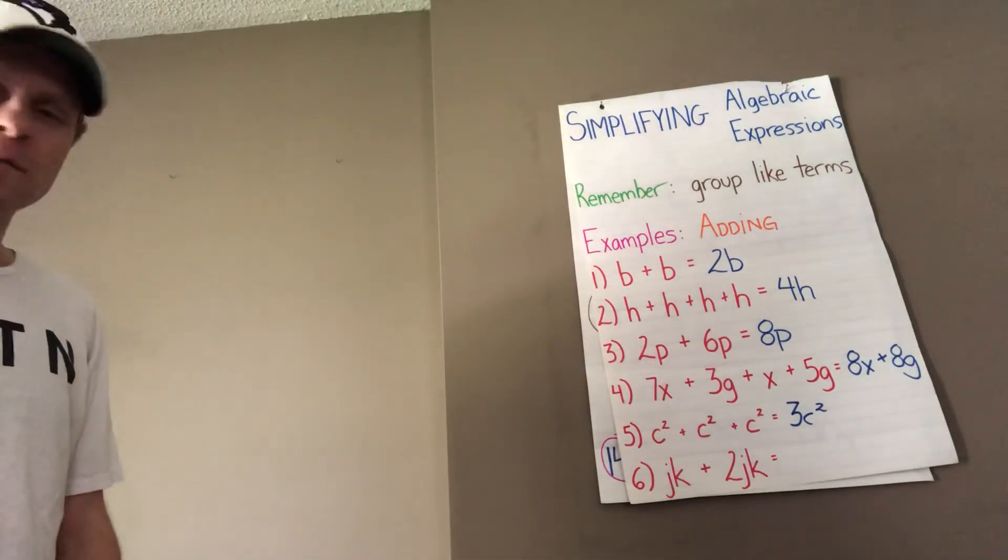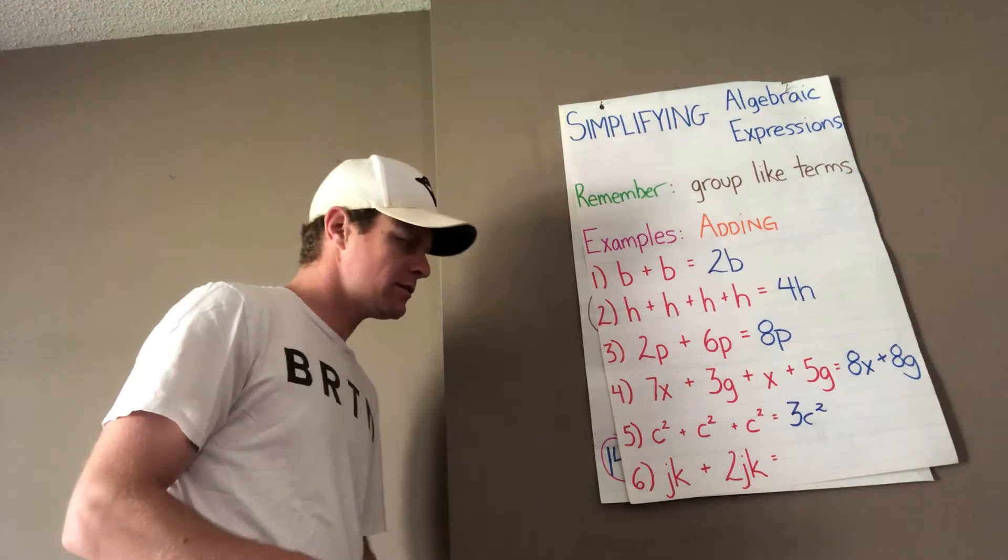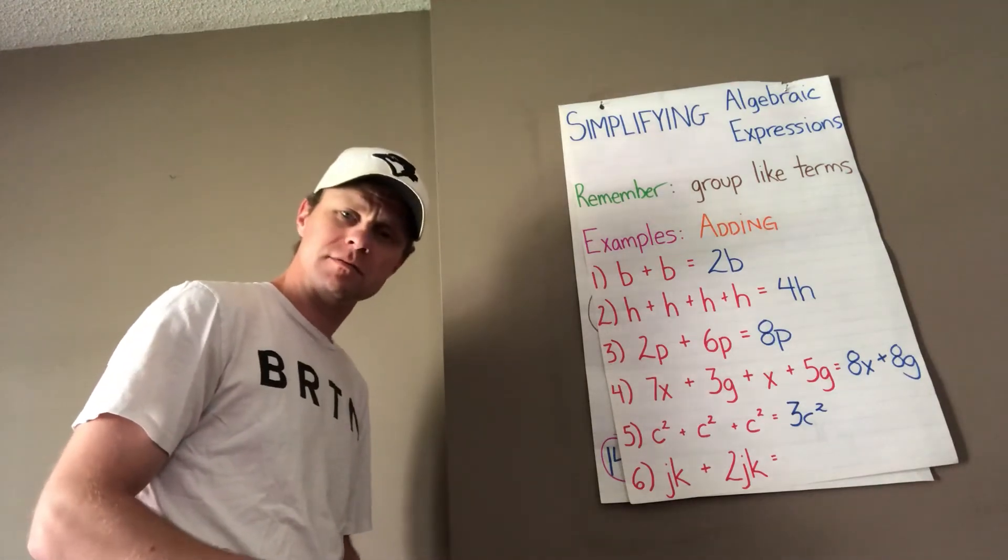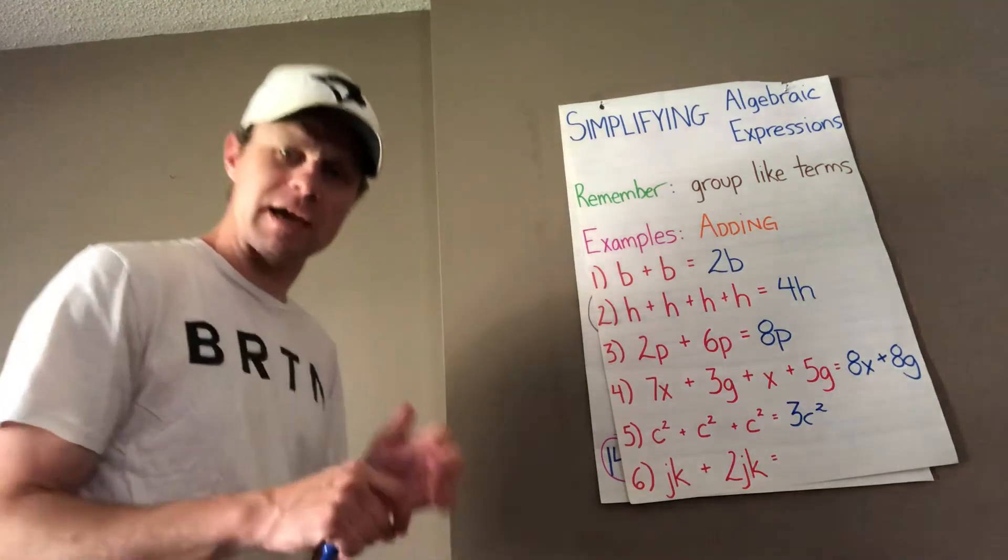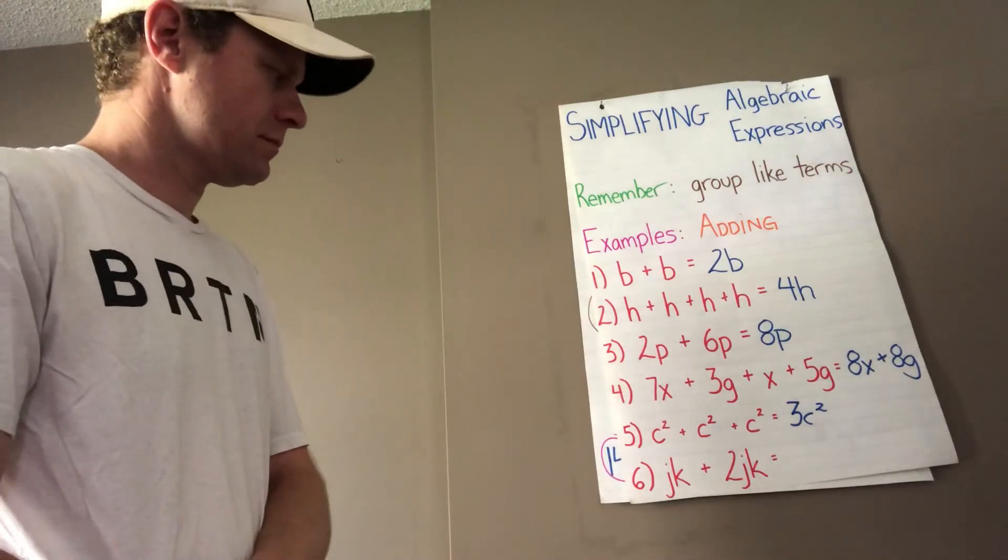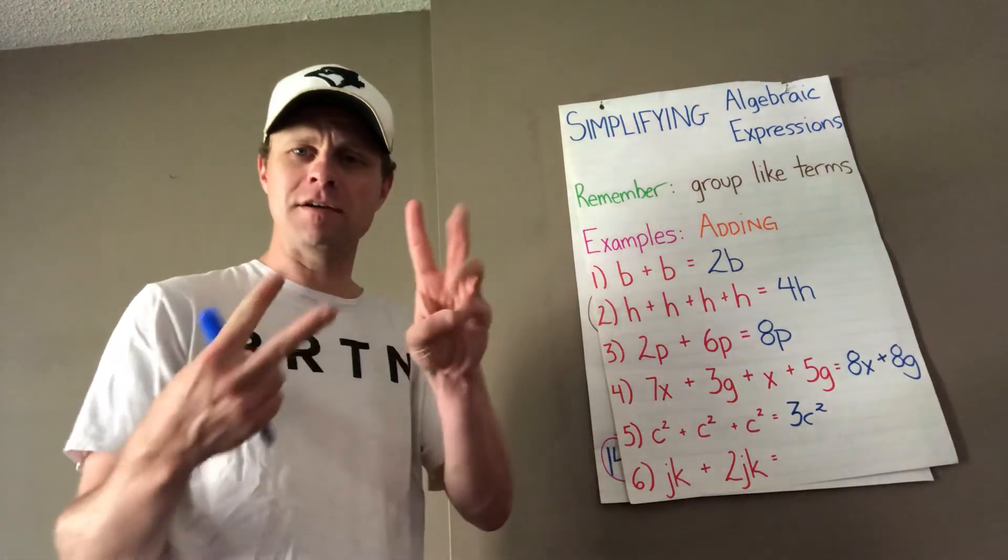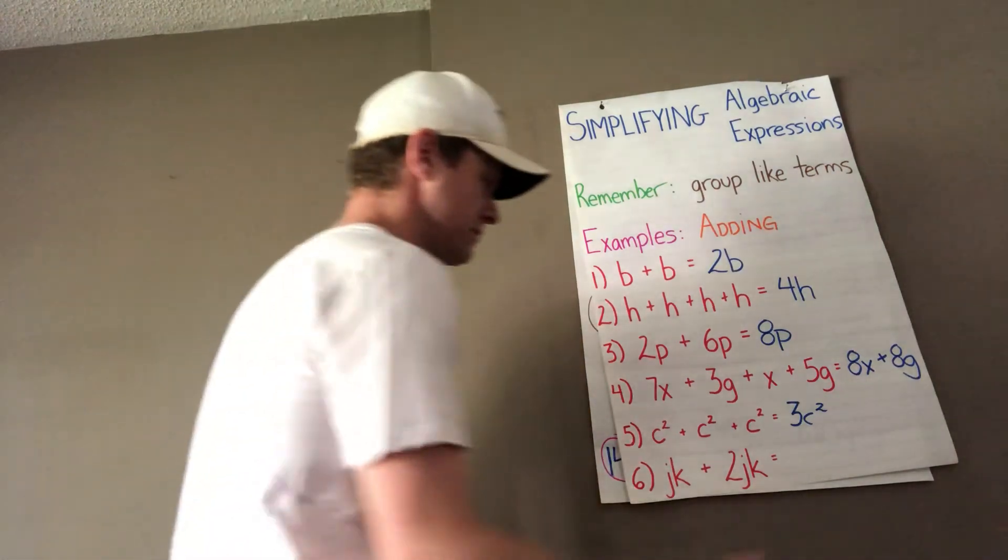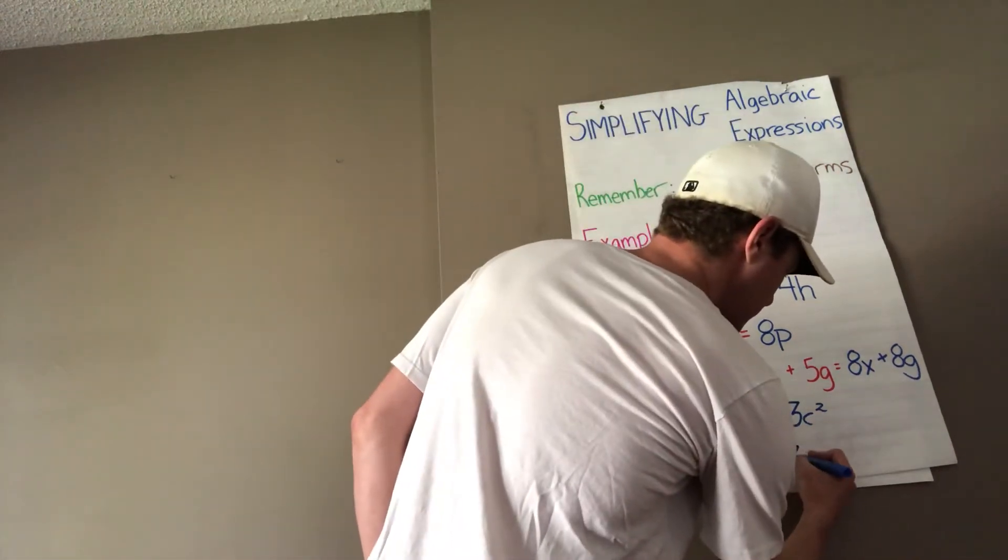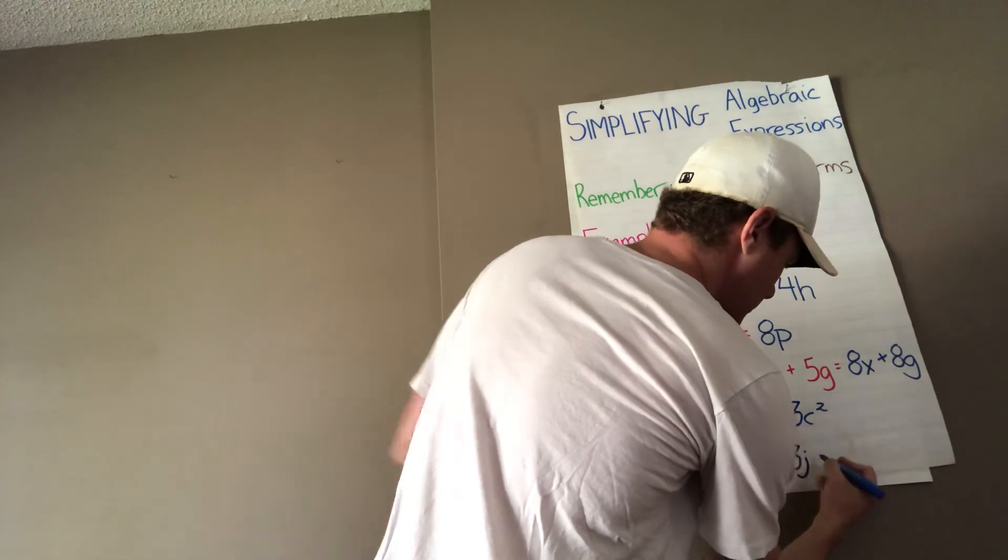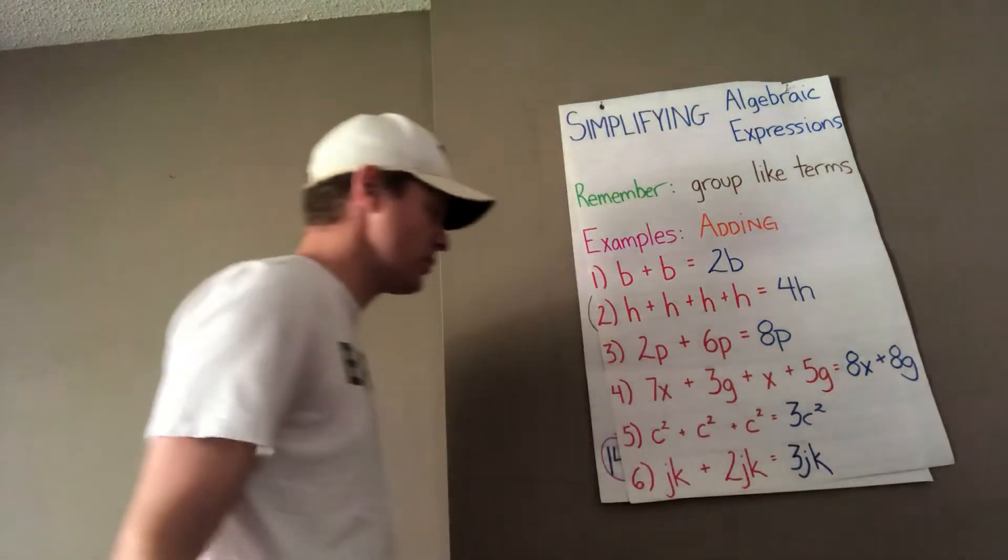And number 6, jk plus 2jk is how many jk? I've got 1 jk, I've got 2 jk, put them together, I've got 3 jk. Beautiful.